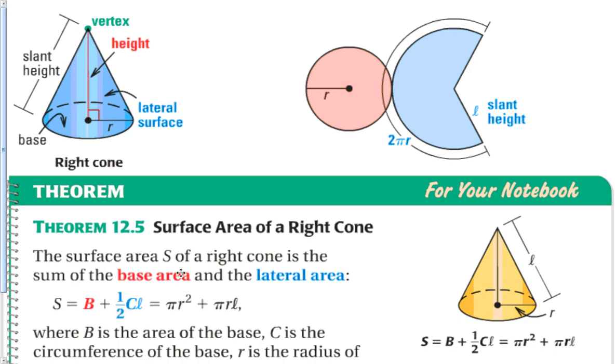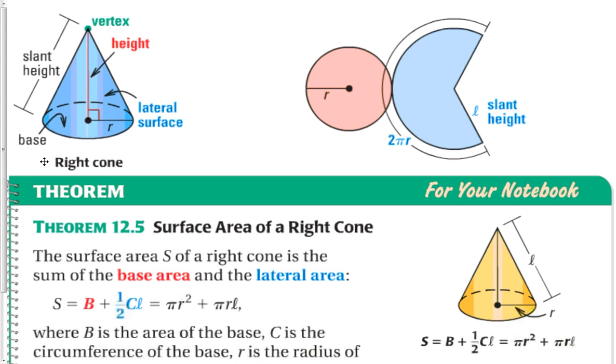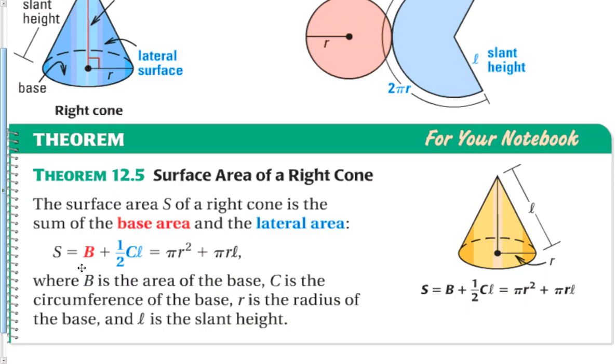Now cones, just like the other non-polyhedron shape formula, is a little bit easier. Still base plus half perimeter height. Perimeter is the circumference, but area of the base is pi r squared. Circumference is 2 pi r L. But when you got half, that cancels and we just get pi r squared plus pi r L, which to me sounds actually like an easier formula than the previous one.